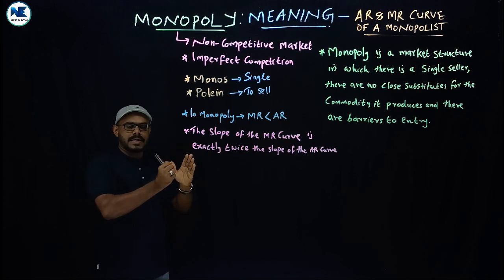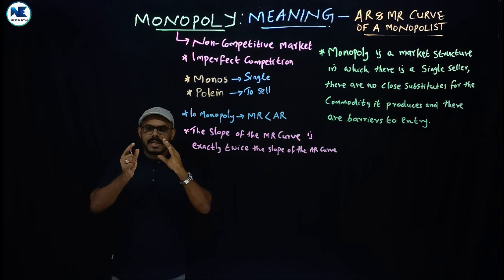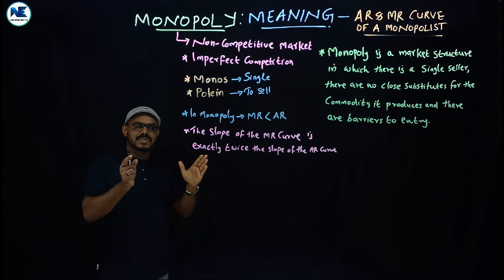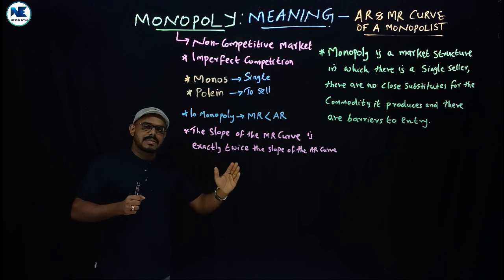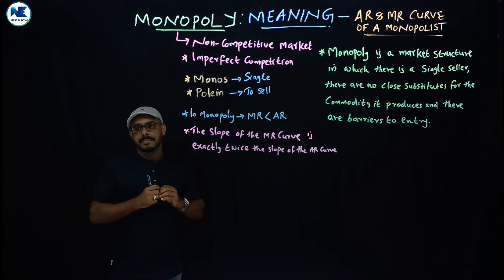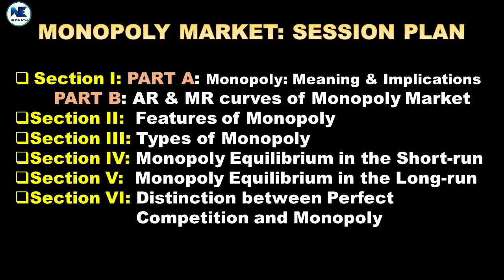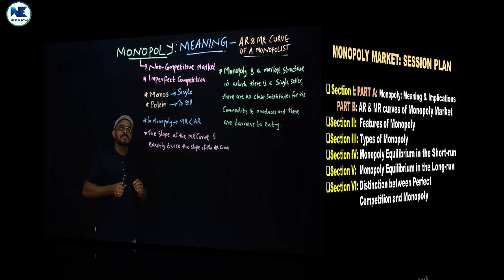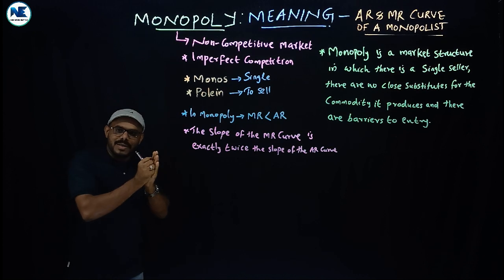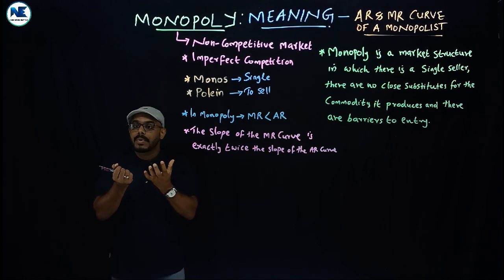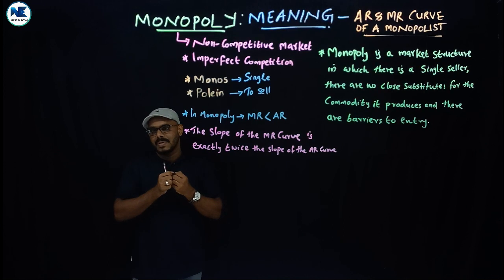The monopoly market is an interesting topic — you can expect five-mark or two-mark questions on it. What is monopoly? We can expect a question on this. Similarly, how can we find the equilibrium price and equilibrium output of a monopolist using the MC and MR approach?